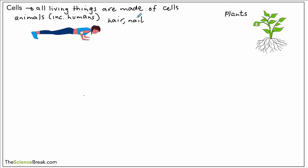Hair, nails, the white part of your teeth called enamel — and if we're thinking about animals you could think about fur and claws and stuff like that — these parts are not made of cells. But pretty much every other part of the body of plants and animals are made of cells.